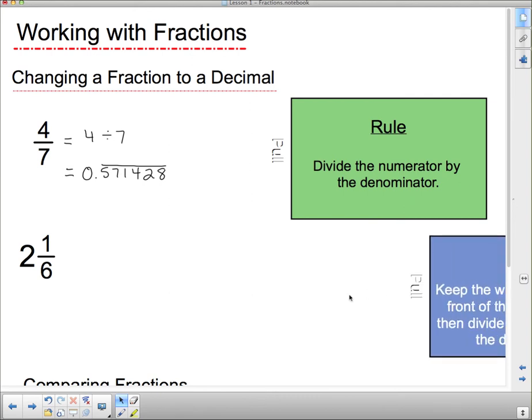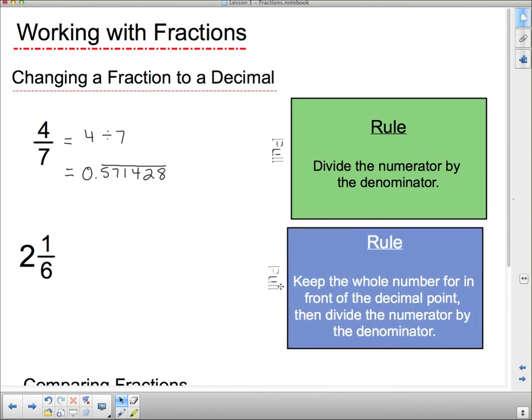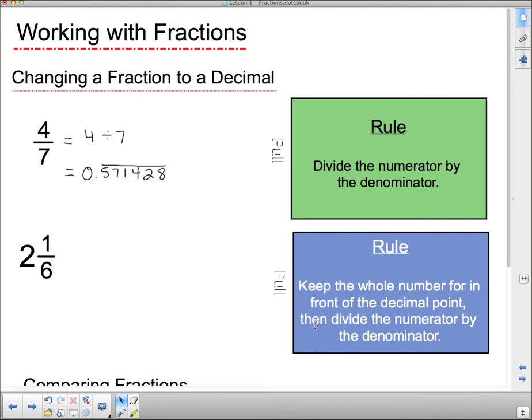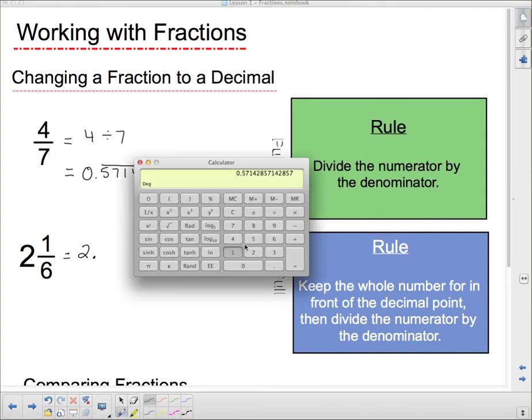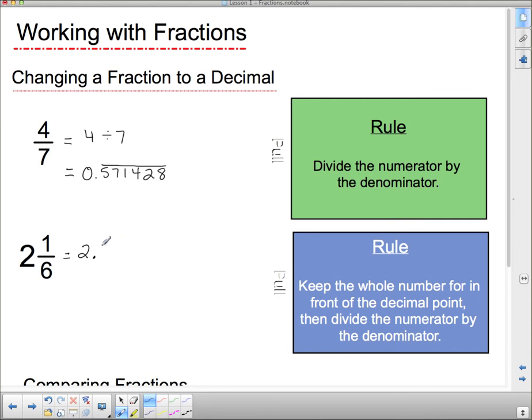Now, how can I change that into a decimal? Let's pull out our little tab here to see how we can change it into a decimal. And it's not a whole lot harder. The rule is keep the whole number for it in front of the decimal point, then divide the numerator by the denominator. So, we can start by saying, I know I'm going to have 2 in front of the decimal point, and then I take 1 and divide it by 6 to get 0.16 repeated. So, we need a 1 and a 6, and the 6 is going to repeat. And to show a repeating digit, we can either put a dot over it, or in the case of many repeating digits, we put a bar over it.